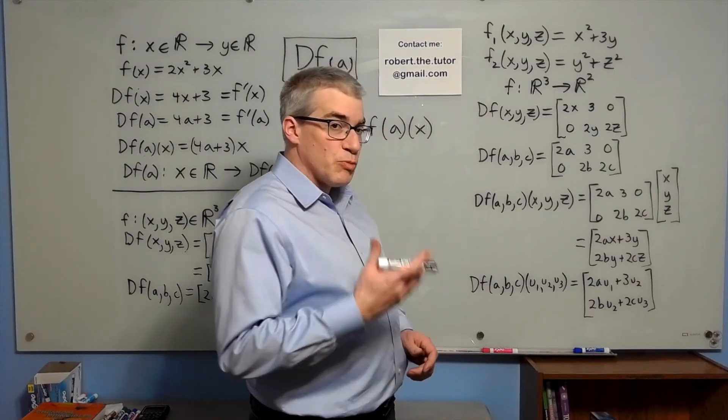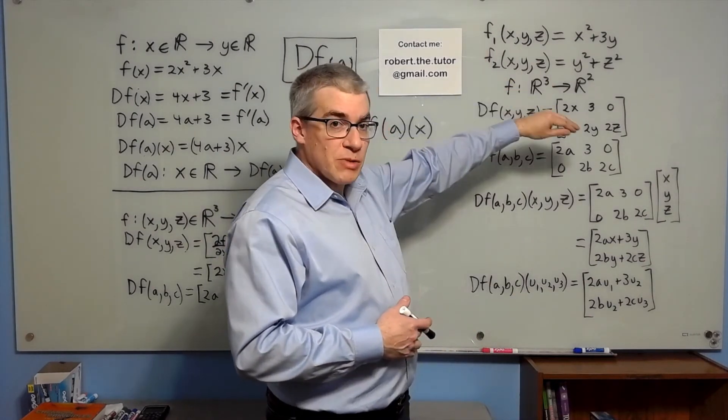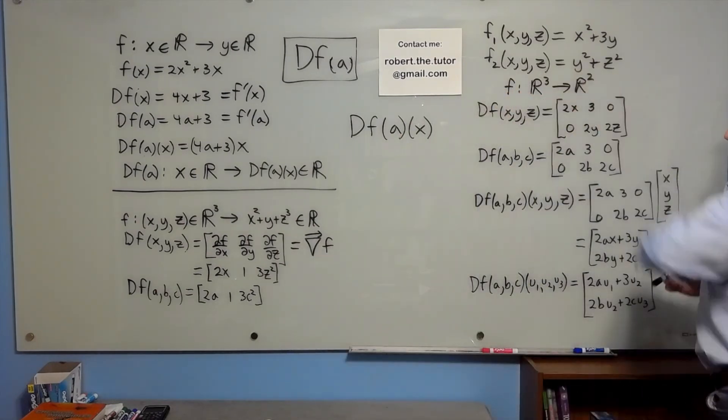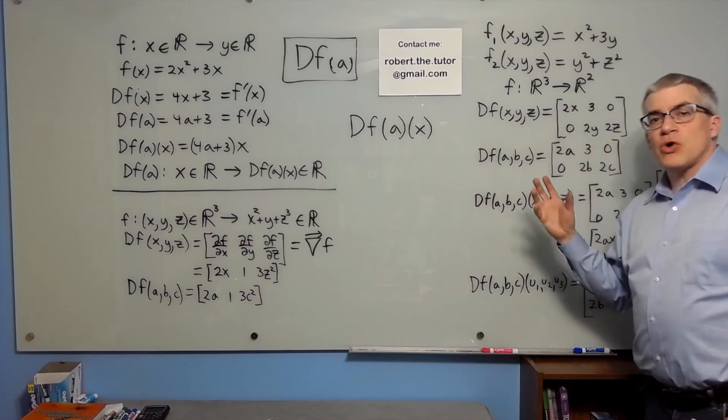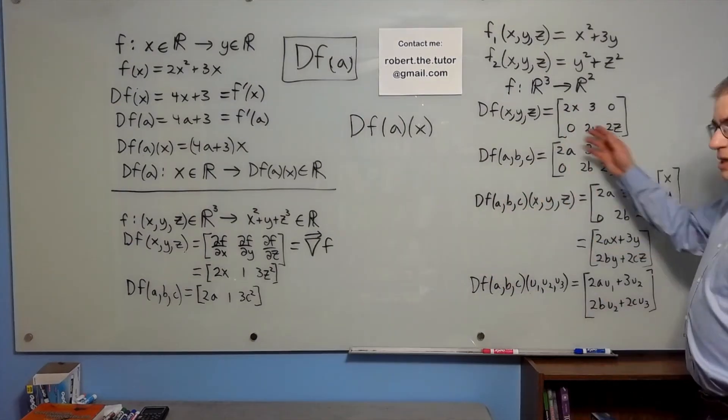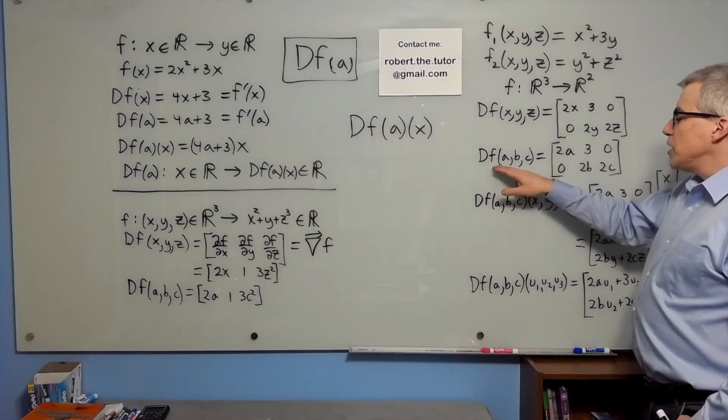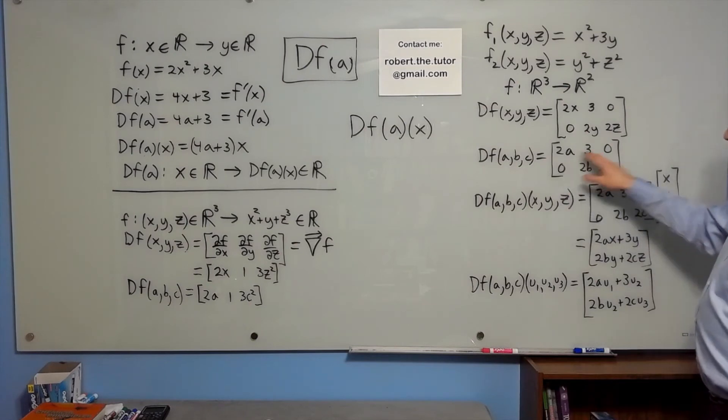Finally, let's look at something more general. Function one of x, y, z, function two of x, y, z. So that f maps from R3 to R2. Now df of x, y, z is the matrix of all the partial derivatives. It's the Jacobian. That's what the Jacobian means. And then if we evaluate at a particular point, a, b, c, we get this matrix.